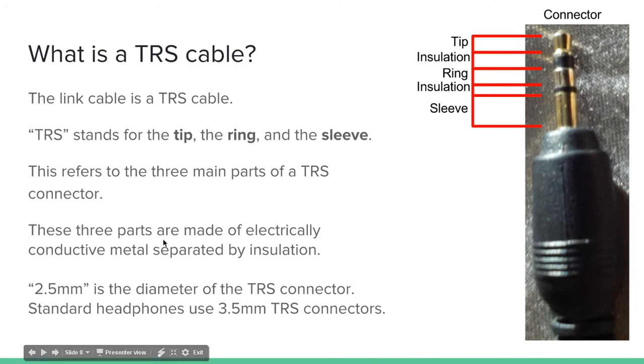These three parts are made of electrically conductive metal separated by insulation. The goldish part, that's the metal, and then the black part is the insulation. So the tip, the ring, and the sleeve.